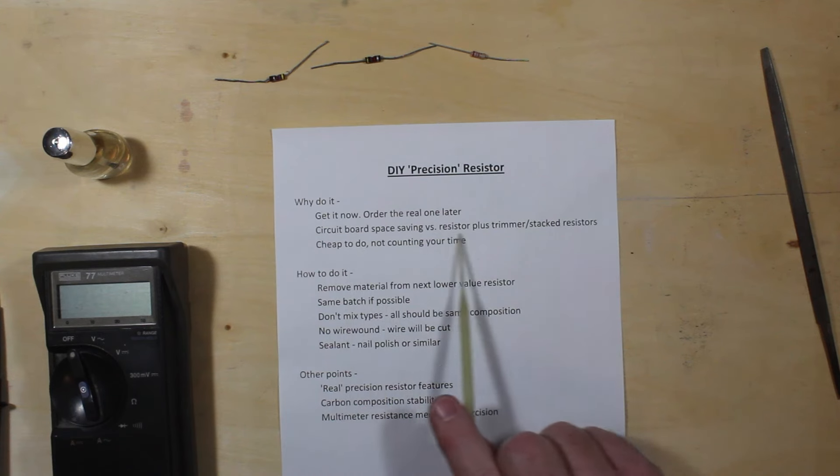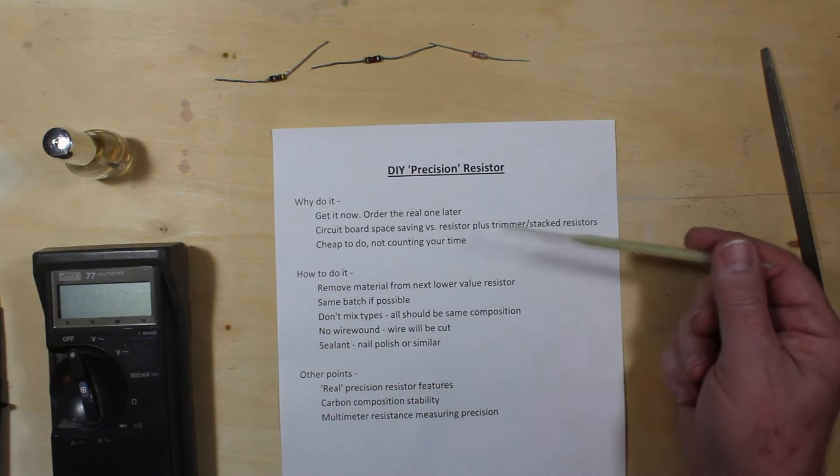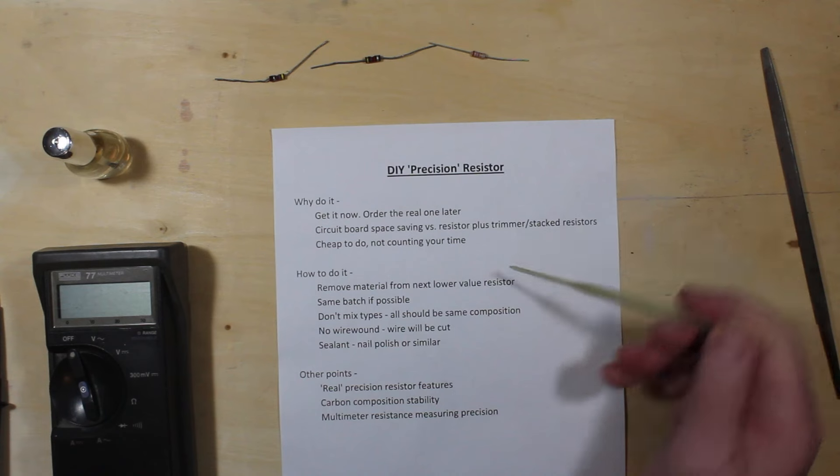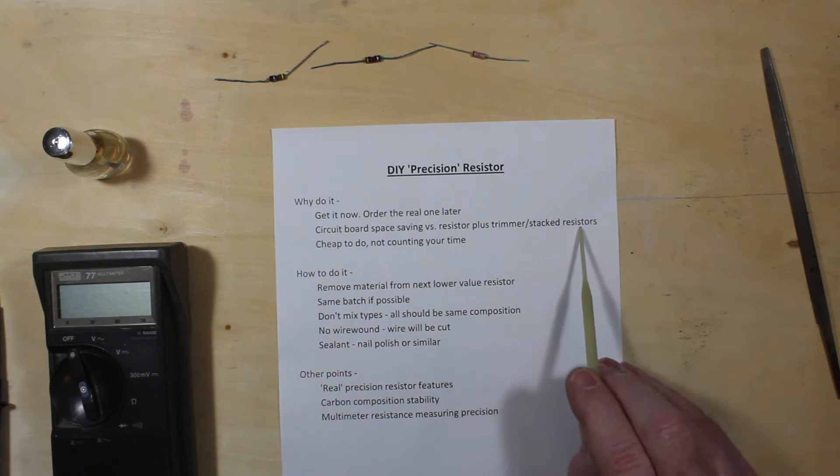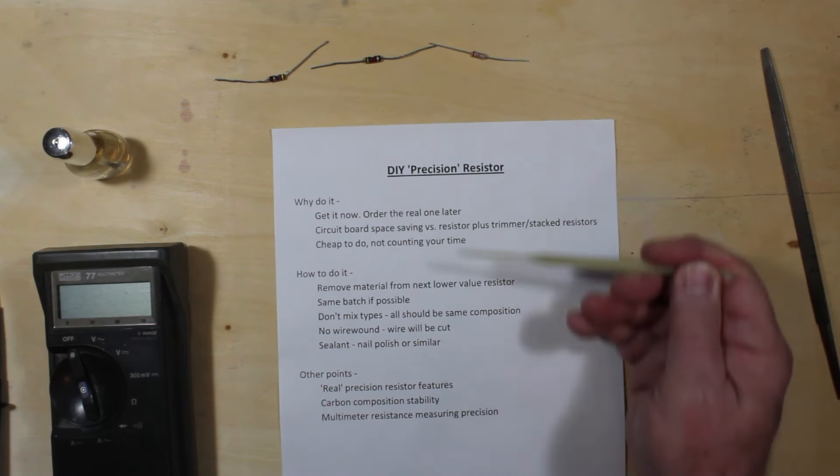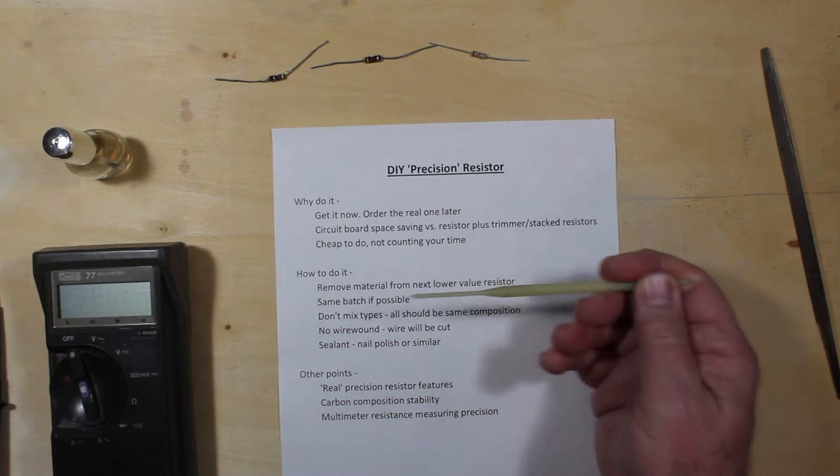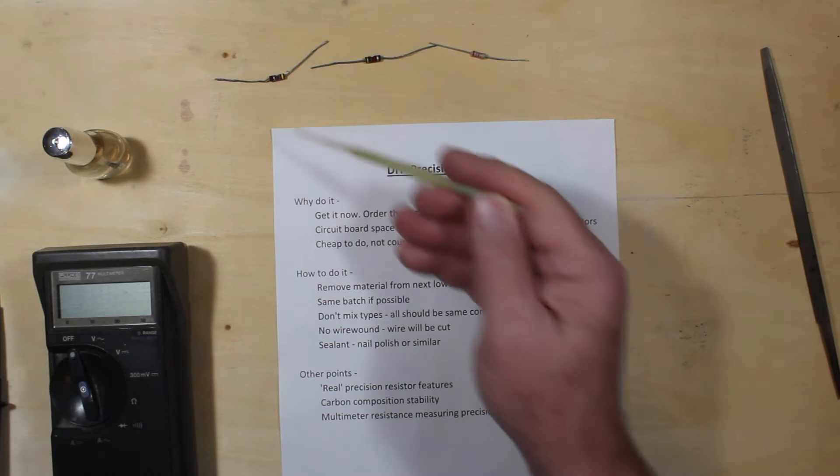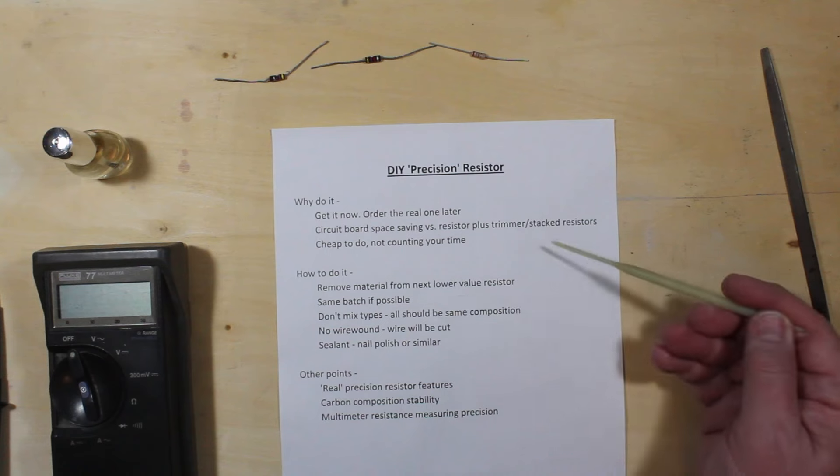You can do this, of course, with trimmers and pots and things like that and you can start stacking resistors in series and in parallel to try and get close to what you are. But especially with these carbon resistors, it doesn't take very long to do this.